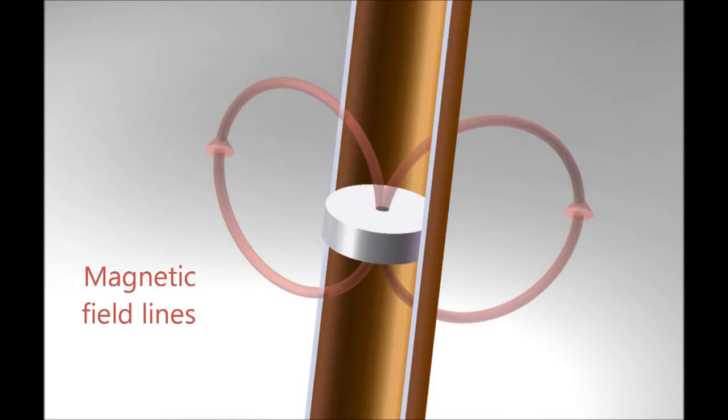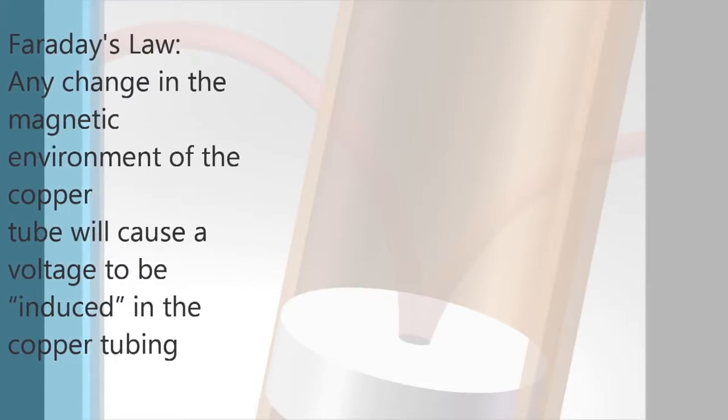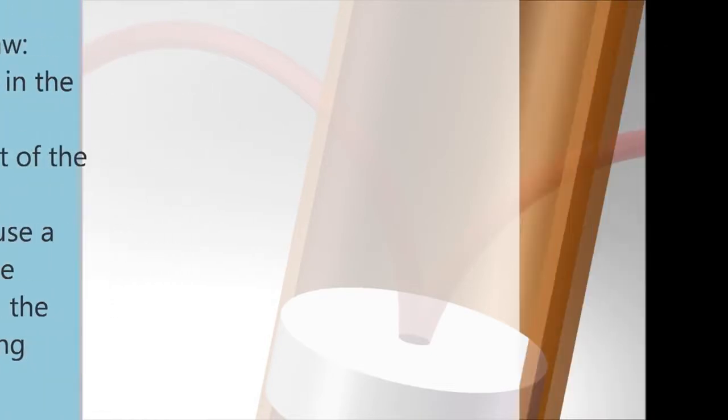This variation in the magnetic field induces an electric current, as predicted by Faraday's law. Faraday's law states that any change in the magnetic environment of the copper tube will cause a voltage to be induced in the tubing.